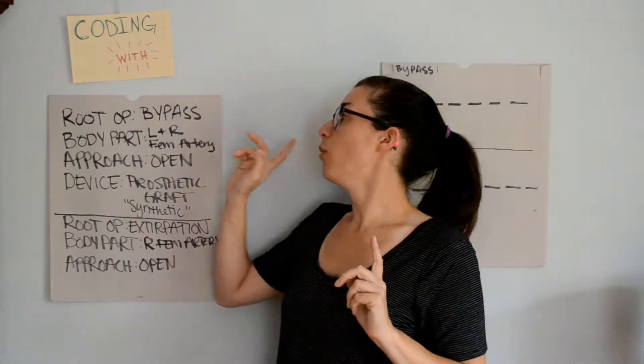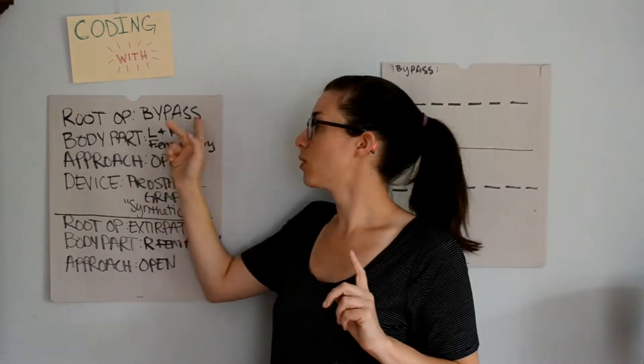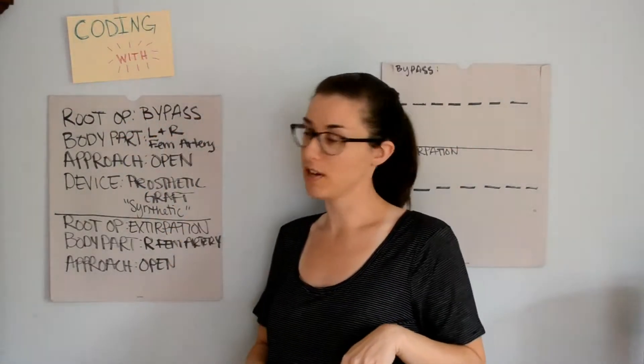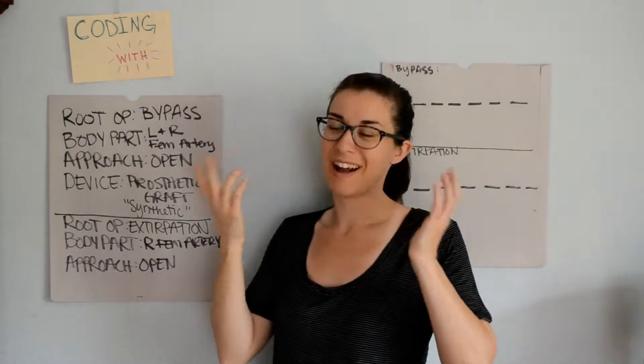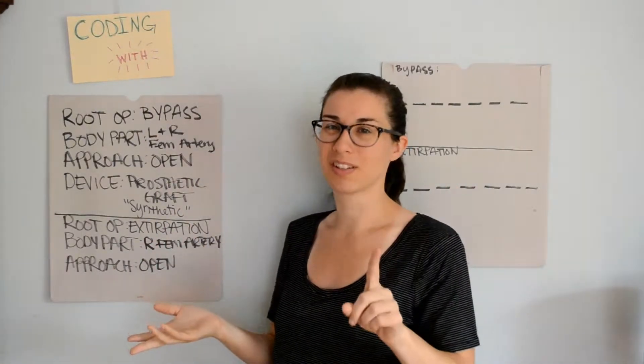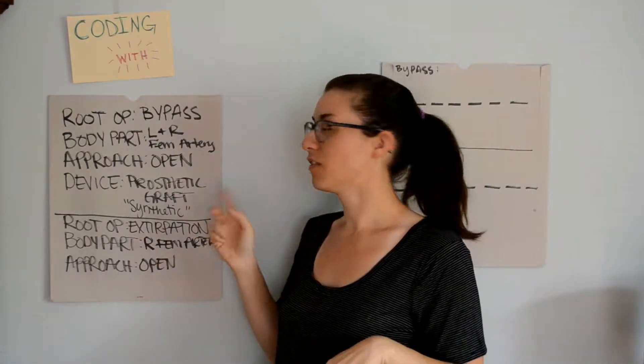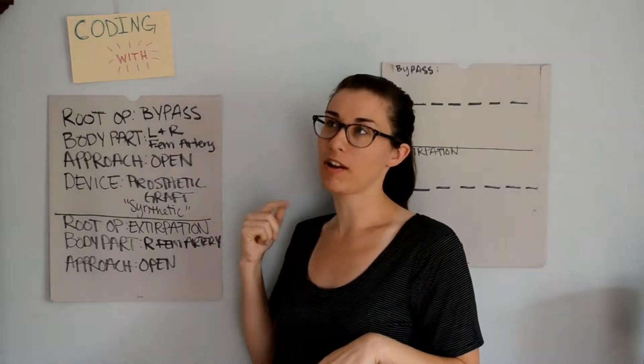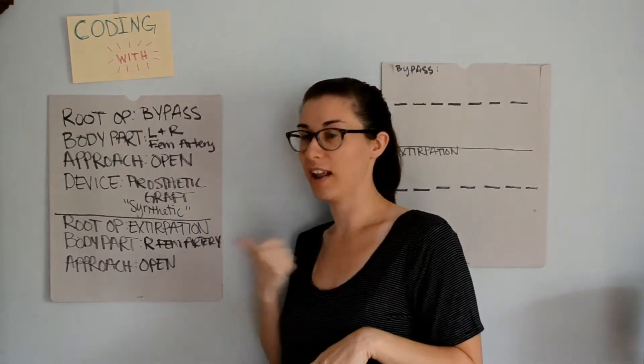We found that the root operation was bypass. The body part was the left and right femoral arteries. The approach I decided was open, and I'm still sticking with that approach. The device was a prosthetic graft, but we already know PCS will use the term synthetic graft.